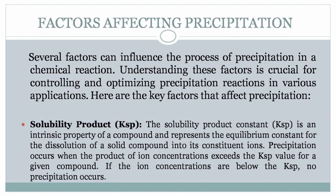First, solubility product Ksp. The solubility product constant Ksp is an intrinsic property of a compound and represents the equilibrium constant for the dissolution of a solid compound into its constituent ions. Precipitation occurs when the product of ion concentrations exceeds the Ksp value for a given compound. If the ion concentrations are below the Ksp, no precipitation occurs.